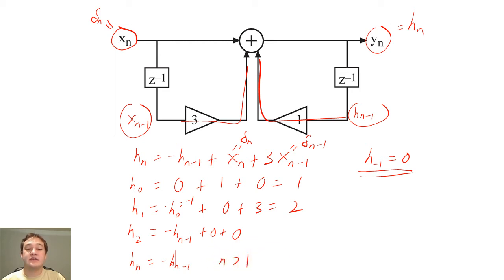h sub n will simply oscillate between 2 and negative 2, and this oscillation can be described mathematically.